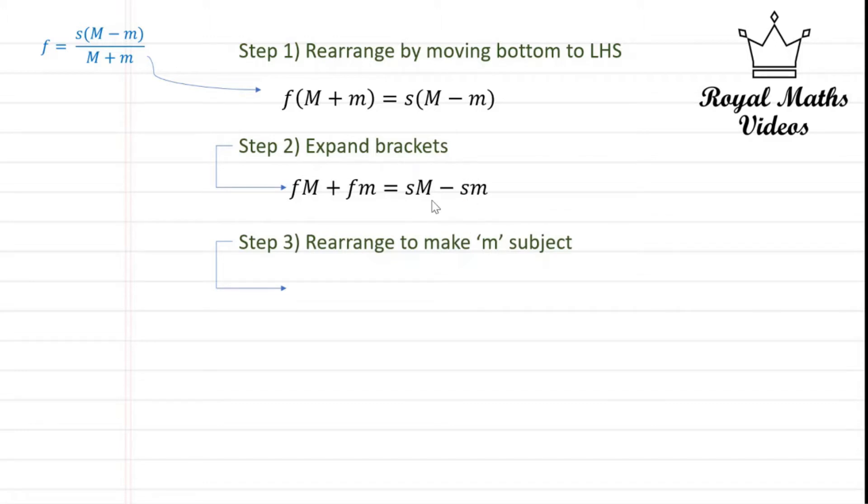Now in order for us to do this all we have to do is plus s and lowercase m to the left hand side and minus f to the right hand side. Now this is done to make sure that the factors of lowercase m and uppercase M are on different sides.